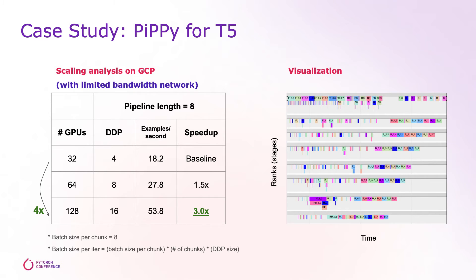On the right hand side is a visualization of one of the pipelines. We can see a roughly V shape from the visualization, which is the expected behavior of a pipeline in training. We can also see that the backward stage of the pipeline is well packed.